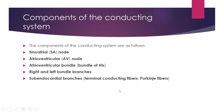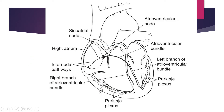There are five main components of the conducting system of the heart. Number one is the SA node, the sinoatrial node. Number two is the AV node, the atrioventricular node. Number three is the atrioventricular bundle, or the bundle of His. Number four is the right and left bundle branches. And number five is the subendocardial branches, which are the terminal conducting fibers and the Purkinje fibers.